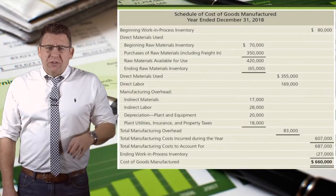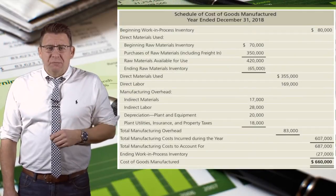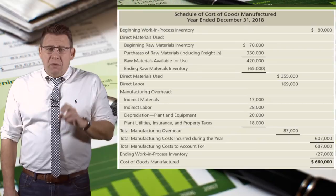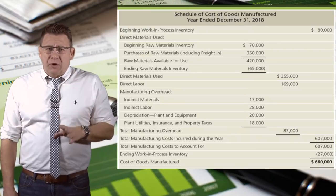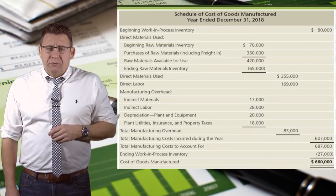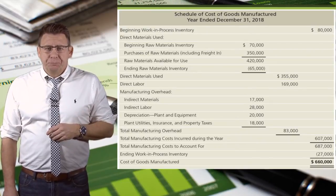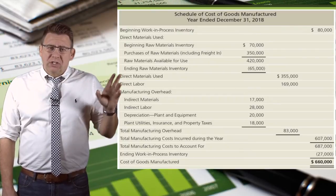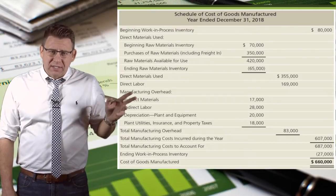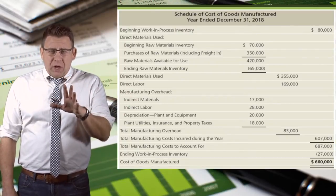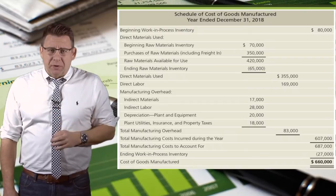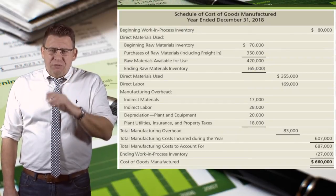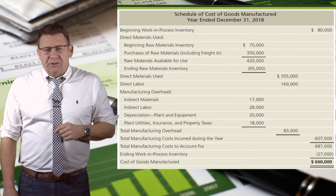The schedule of cost of goods manufactured is basically a numerical summary of the cost flows we've just seen. A complete schedule looks like this, but before you get overwhelmed with this example, let's go through the steps, and I think you'll find it pretty understandable.